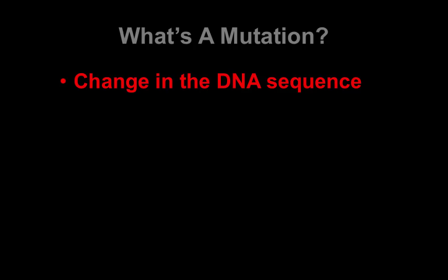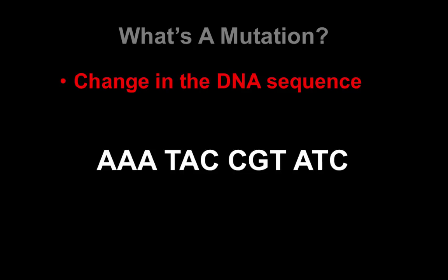So first off, what is a mutation? A mutation is a change in the DNA sequence — the actual code. For example, this might be a small section of DNA, and a mutation would be going from an A to a C. That changes the code, and so that would be an example of a mutation.